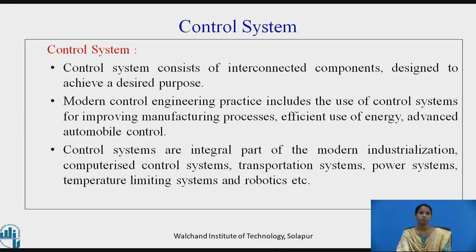Let us see what is a control system. A control system consists of interconnected components designed to achieve a desired purpose. Modern control engineering practice includes the use of control systems for improving manufacturing processes. Control systems are an integral part of modern industrialization, computerized control systems, transportation systems, power systems, temperature limiting systems, and robotics.